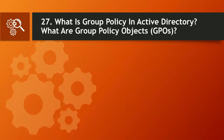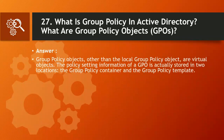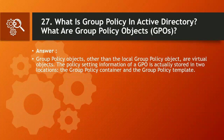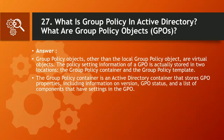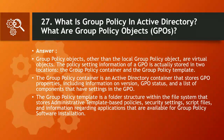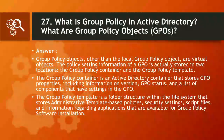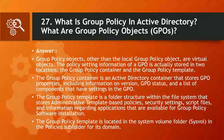Question 27: What is group policy in Active Directory and what are Group Policy Objects (GPOs)? Answer: Group policy objects other than the local group policy object are virtual objects. The policy setting information of a GPO is stored in two locations: the Group Policy Container and the Group Policy Template. The Group Policy Container is an Active Directory container storing GPO properties including version, GPO status, and a list of components. The Group Policy Template is a folder structure within the file system storing administrative template-based policies, security settings, script files, and information about applications available for software installation. It is located in the SYSVOL folder in the policies subfolder for its domain.